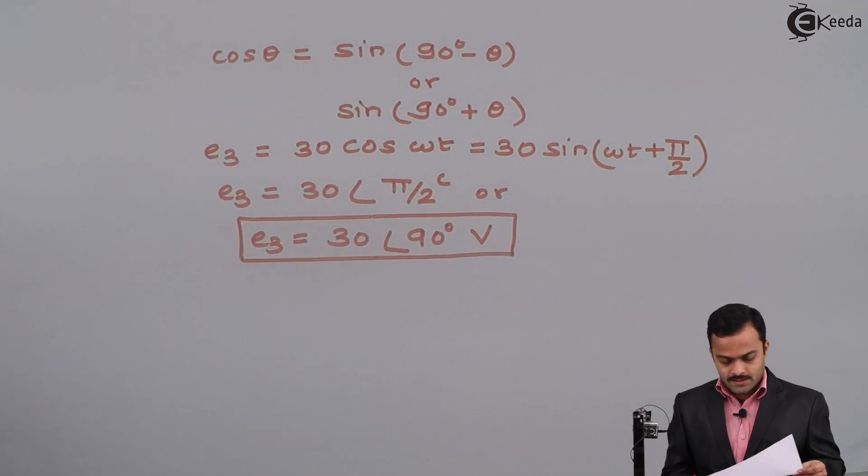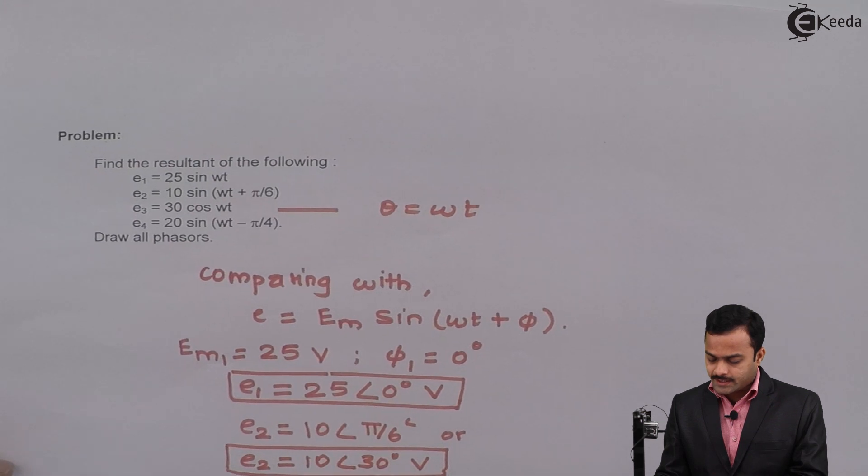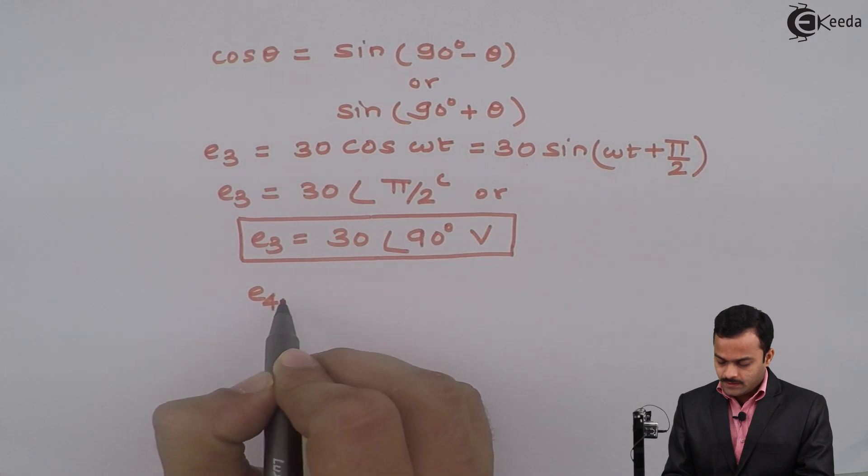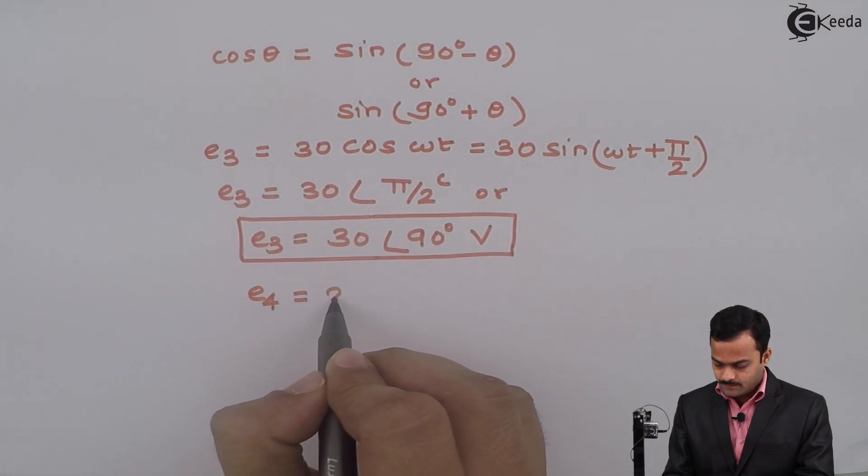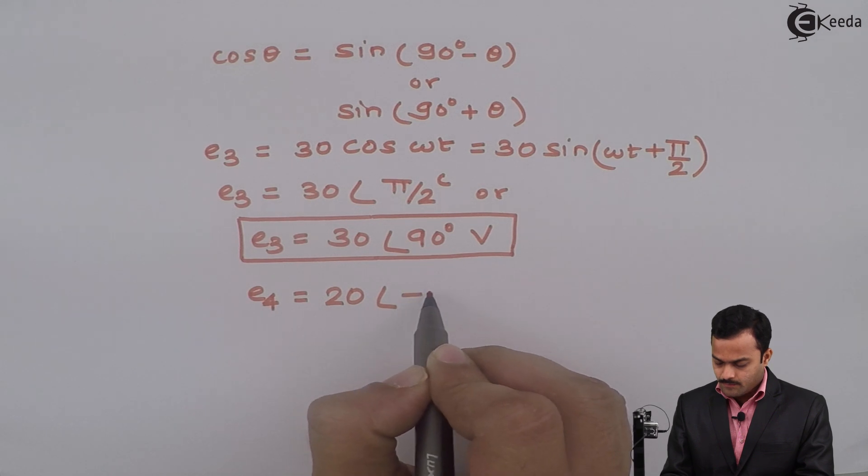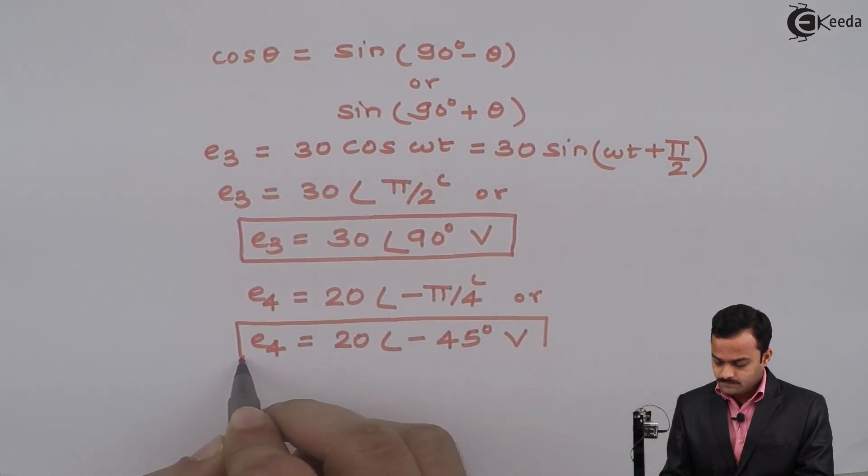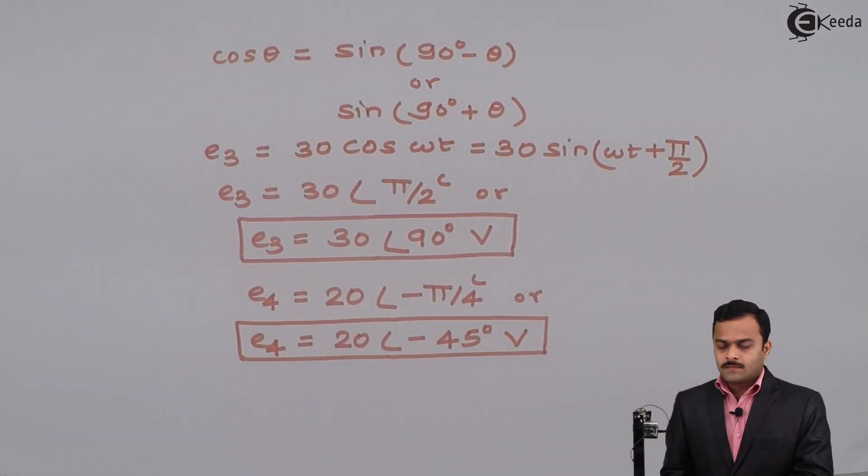And E4 is given as 20 sin(ωt - π/4) radian, or in degrees it will be 20 at an angle -45 degrees volt.